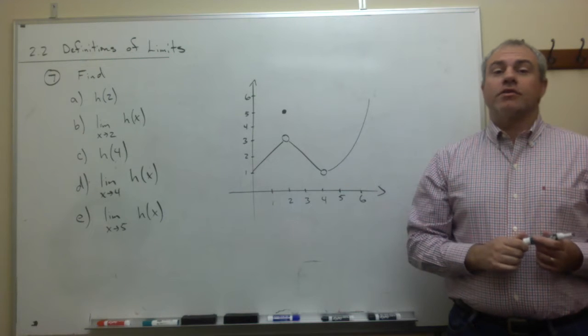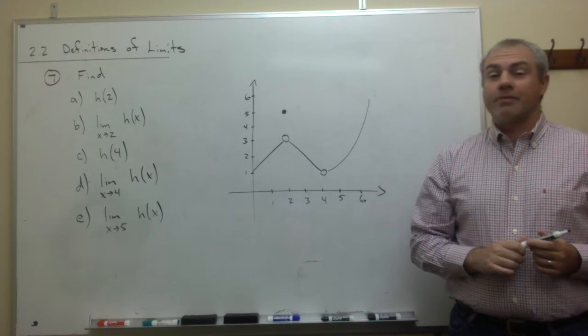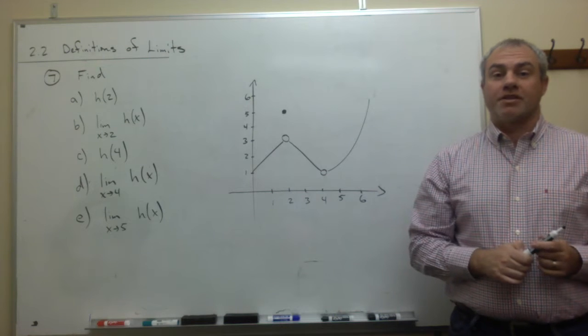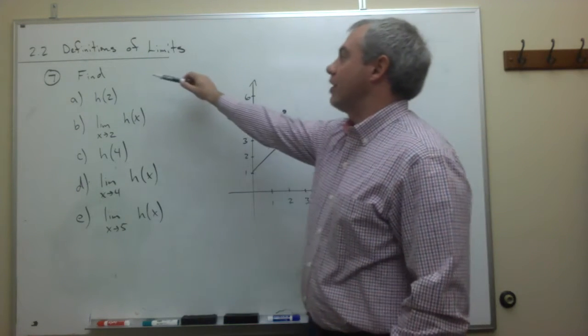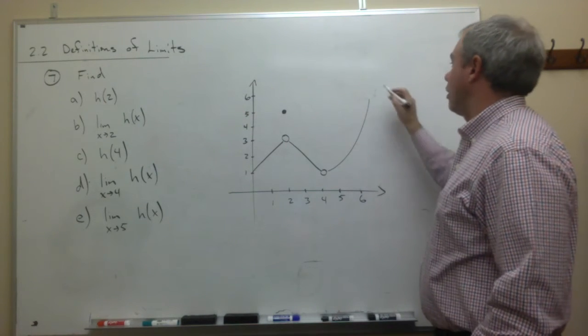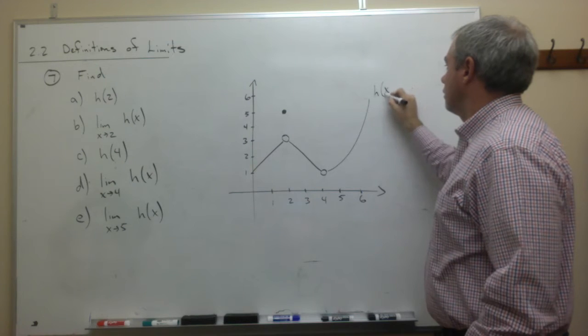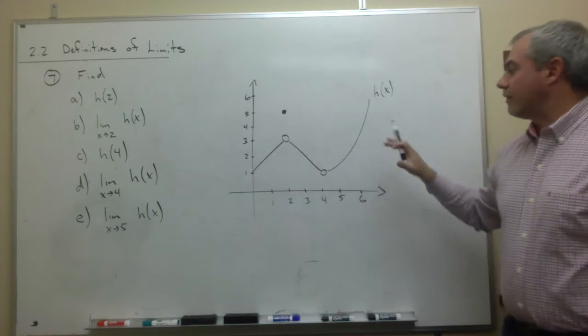Welcome, let's look at section 2.2 definitions of limits, problem number seven. The problem is asking us to find some various values given this graph which we are calling h of x.